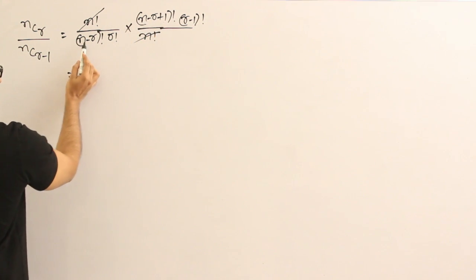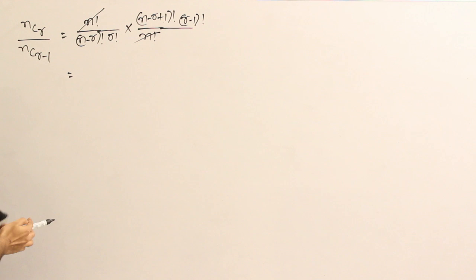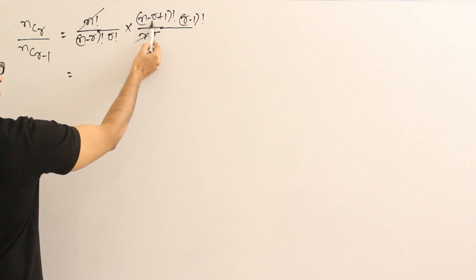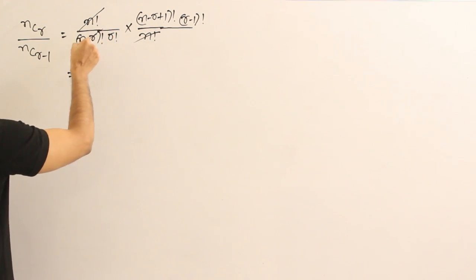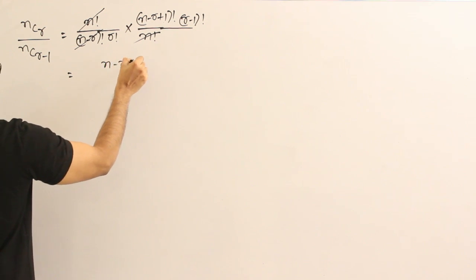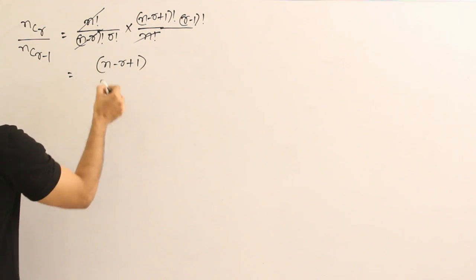Here, there is N minus R plus 1 factorial and here it is N minus R factorial. Which one is greater? N minus R plus 1 is greater. By how many terms? One term. What is the term? N minus R plus 1. Therefore, if I cancelled it out here, what remains is N minus R plus 1. That is what remains.